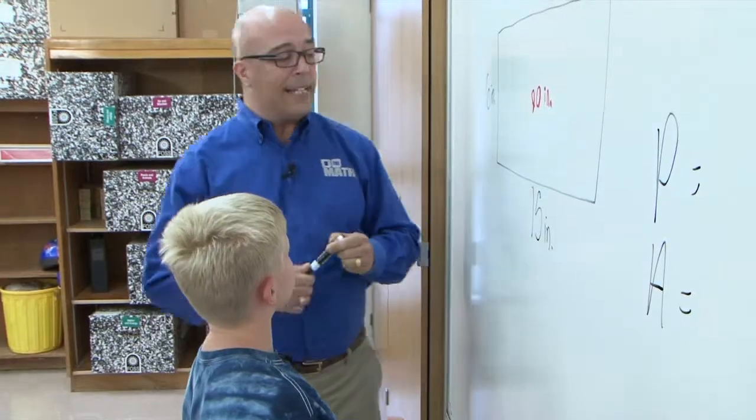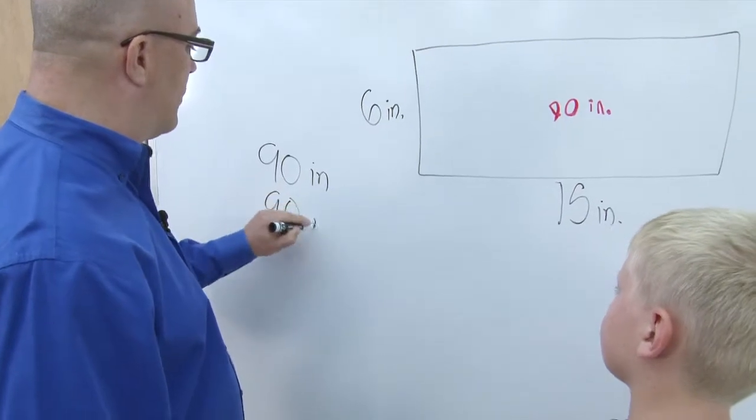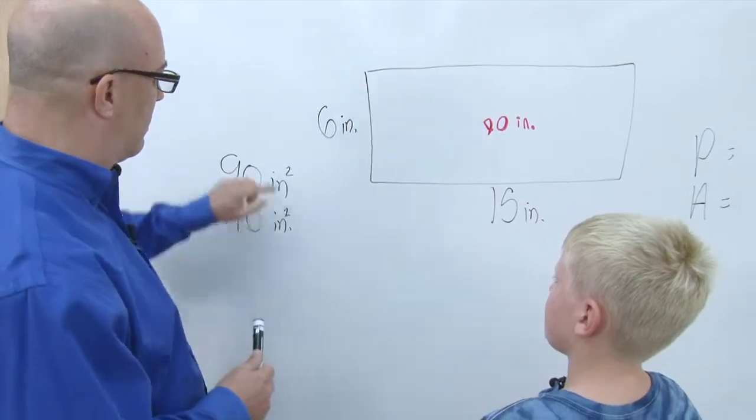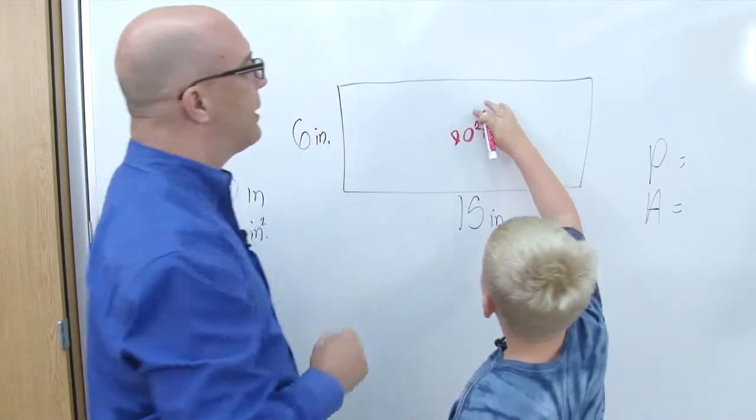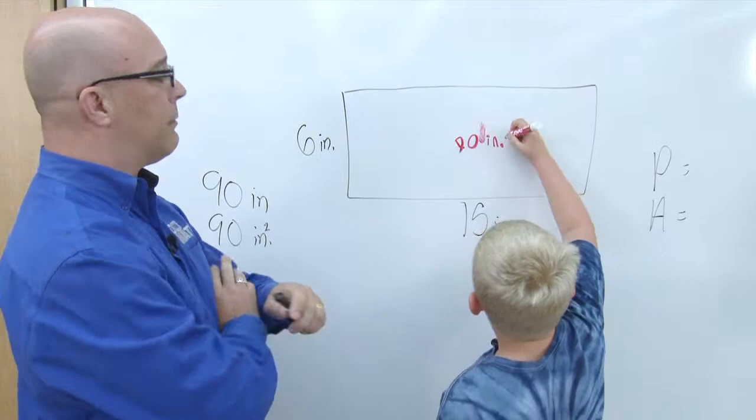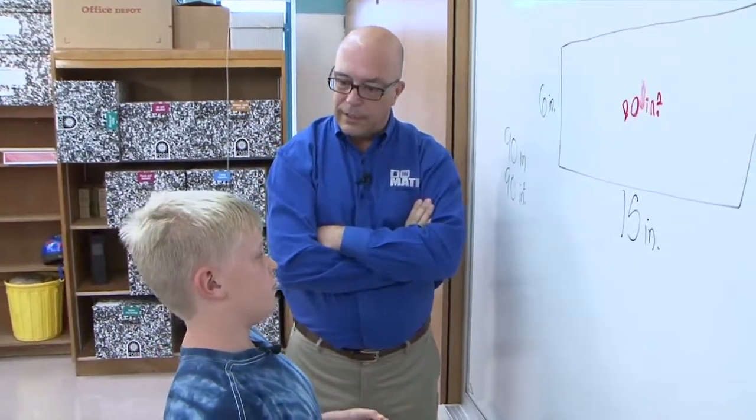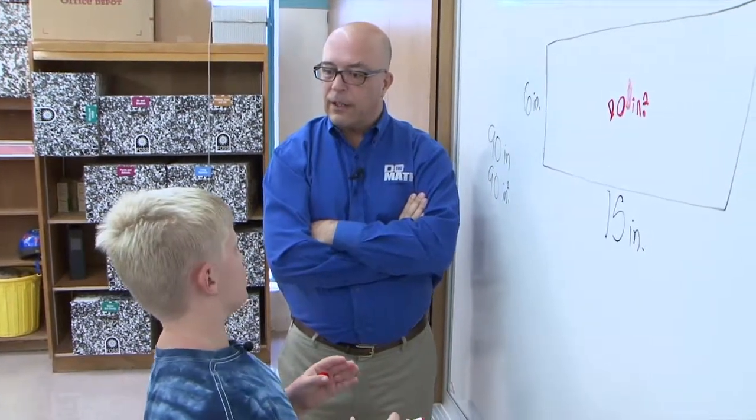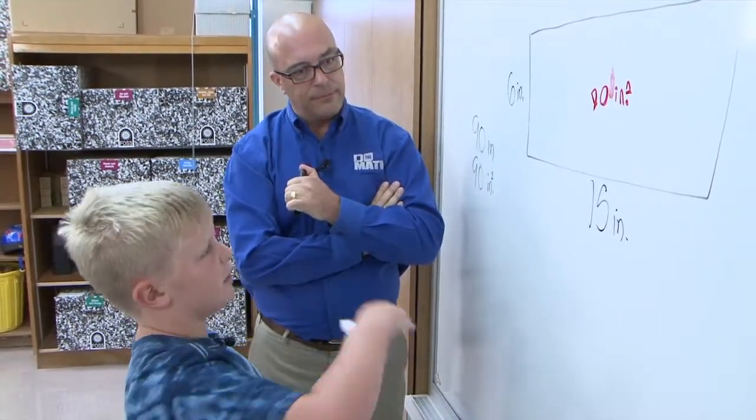90 what? Inches. Is that all? Because you're doing area, right? So you multiply the length times the width. Okay. If I had 90 inches and I had 90 inches square, do you know the difference between those two? Well, 90 inches squared is when it's wrapped up and it's in a square or all together, but if it's not squared it's just one big line of 90 inches.